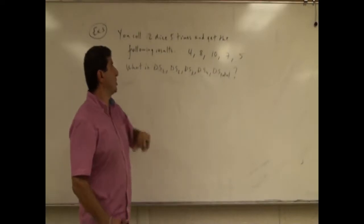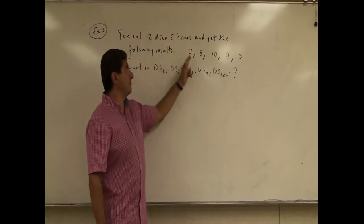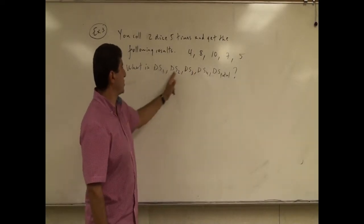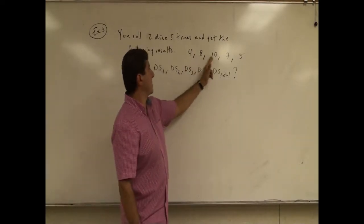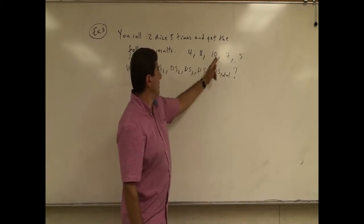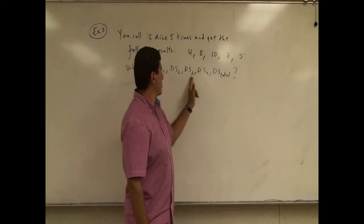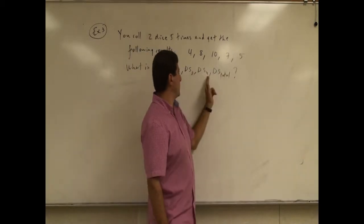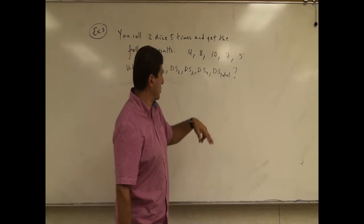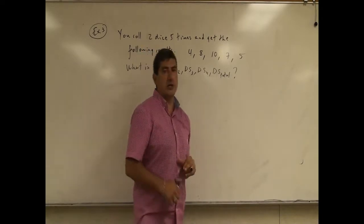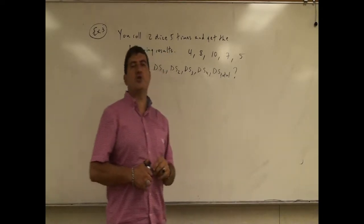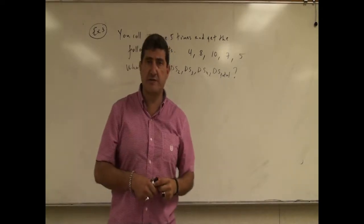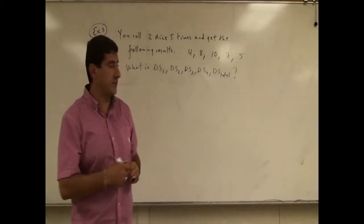What is the change in entropy from the first to the second roll, delta S1? From the second to the third roll, delta S2. From the third to the fourth, delta S3. From the fourth to the fifth, delta S4. And then the total change in entropy of the universe as a result of these rolls of dice.